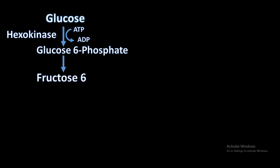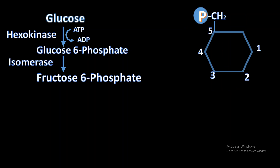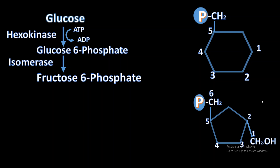Glucose-6-phosphate gets converted into fructose-6-phosphate, which is the isomer of glucose-6-phosphate. This happens in the presence of the enzyme isomerase. The need for this isomerization is that glucose contains only one side chain, which is already filled with the phosphate. In order to add more phosphates, we need another side chain.